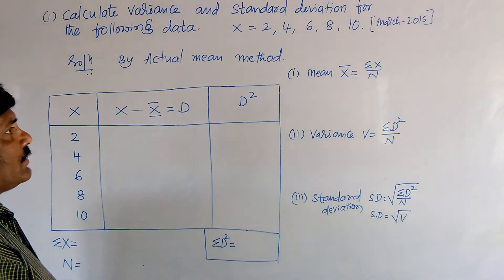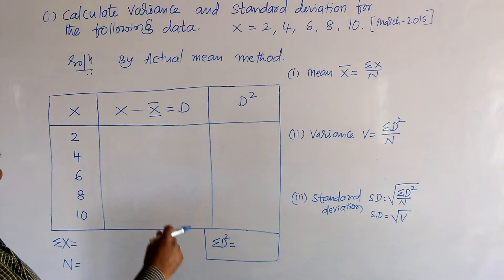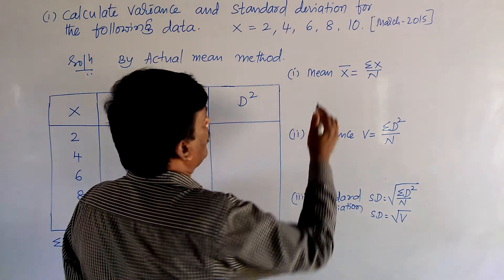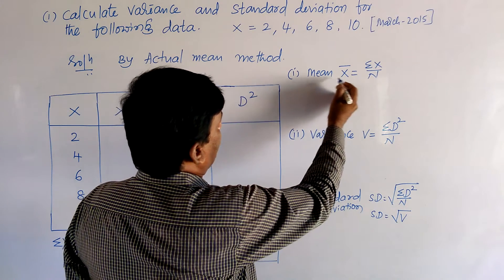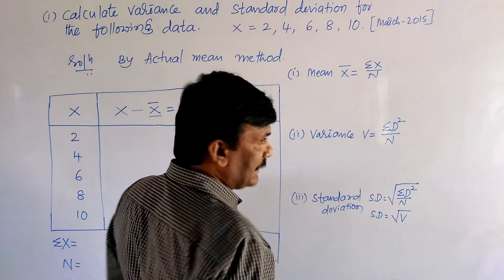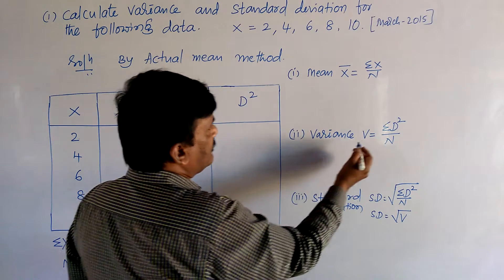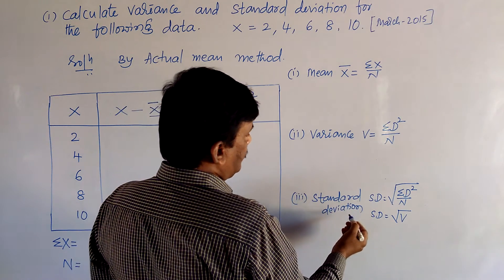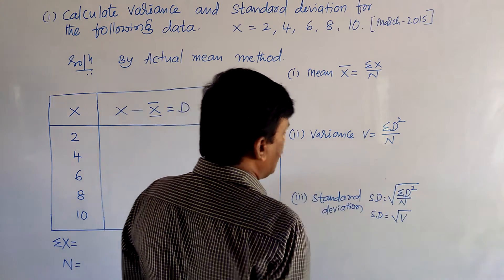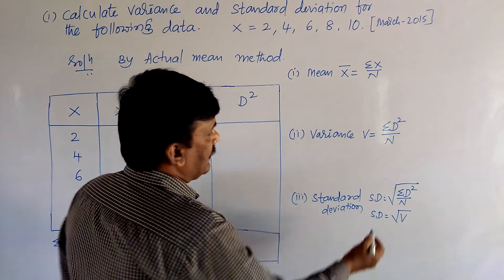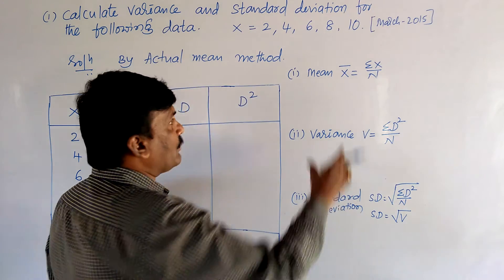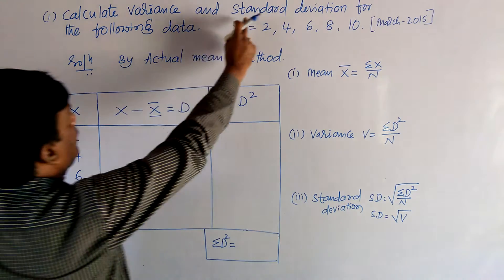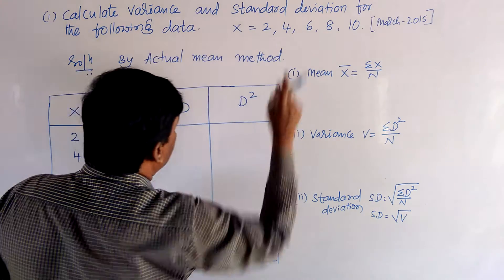By solving for standard deviation and variance, we follow three formulas. First, mean x̄ = σx / n. Second, variance V = σd² / n. Third, standard deviation SD = √(σd² / n), or equivalently, standard deviation = √variance. Using these formulas, we will calculate the standard deviation and variance of the ungrouped data.